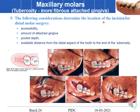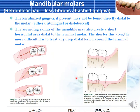Factors determining the location for incision include: accessibility, amount of attached gingiva, pocket depth, and available distance from the distal aspect of the tooth to the end of the tuberosity. Two parallel incisions are placed with releasing incisions, the area is opened, the root surface is cleared, and sutured back. For mandibular molars, keratinized tissue is present either to the distal-lingual or distal-buccal areas, so the incision is directed accordingly. There must be sufficient space between the ramus and the tooth before planning this surgery.